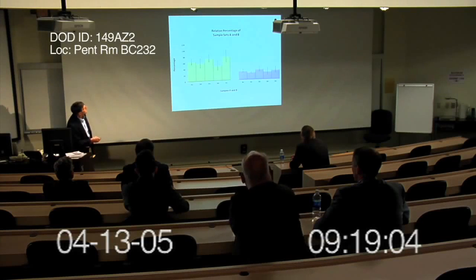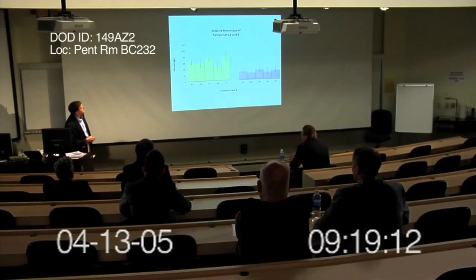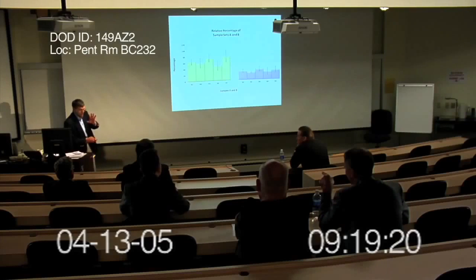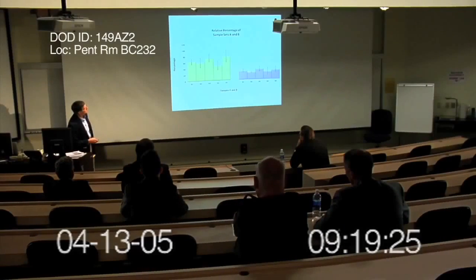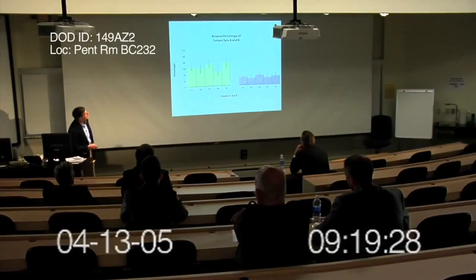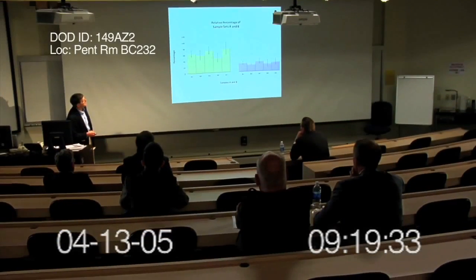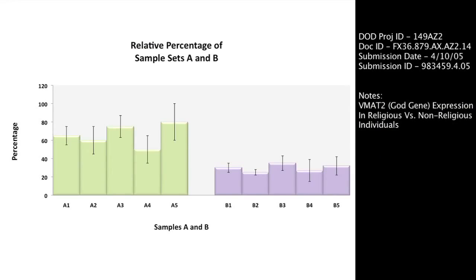On the left over here, we have individuals who are religious fundamentalists, religious fanatics, and this is the expression — RT-PCR, real-time PCR expression of the VMAT2 gene. Over here, we have individuals who are not particularly fundamentalists, not particularly religious, and you can see there's a much reduced expression of this particular gene, the VMAT2 gene. This is another evidence that supports our hypothesis for the development of this approach.